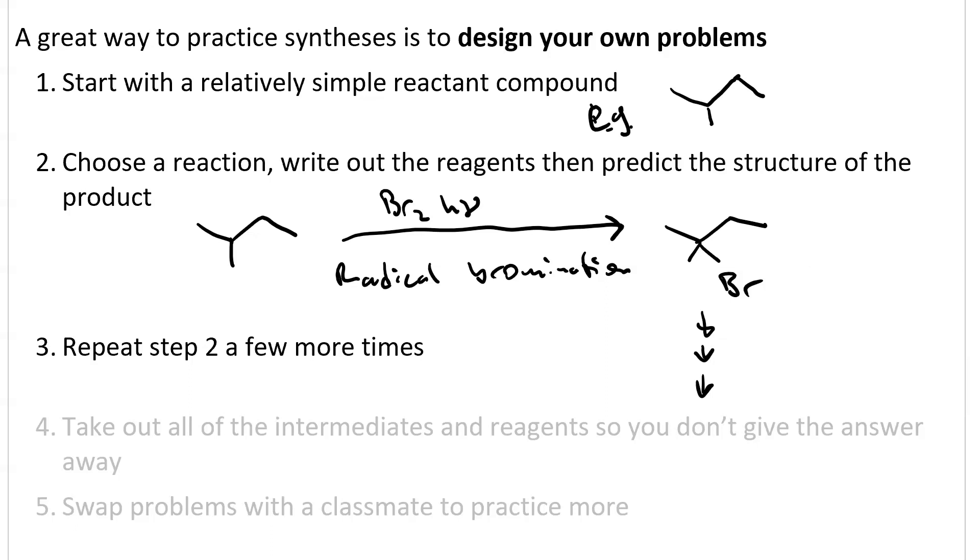Here, I've got an alkyl halide. I can do substitution or elimination. And if I do substitution, it's got to be SN1 because it's a tertiary alkyl bromide. If I do elimination, it can either be Zaitsev or it can be Hoffman. I'm going to choose to do Zaitsev.